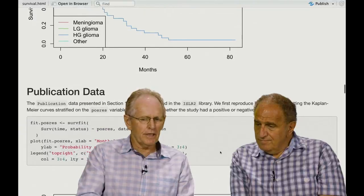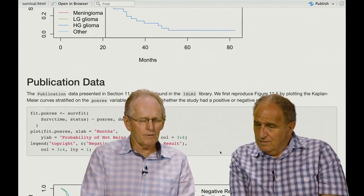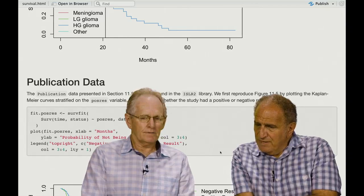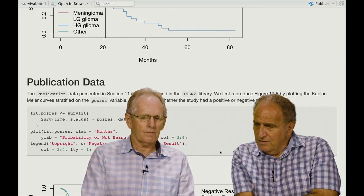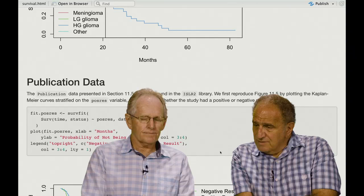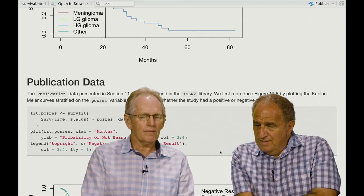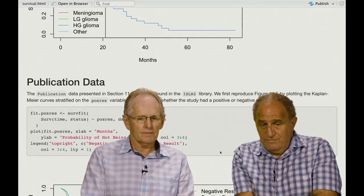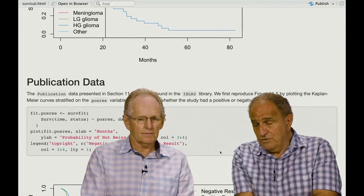The next data is publication data. Rob, can you tell us a bit about the publication data? This data was looking at publication of papers that were described in clinical trials. The outcome is time until publication. And what was of particular interest is whether or not the trial had a positive result versus a null result,